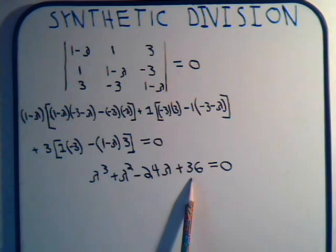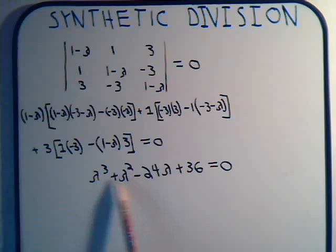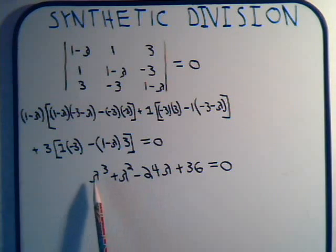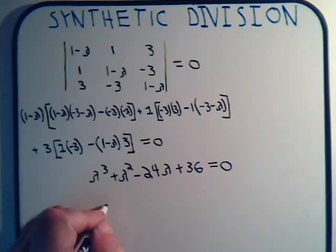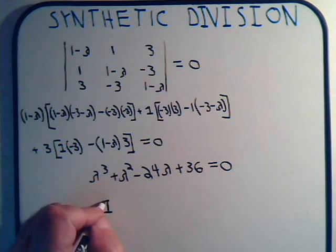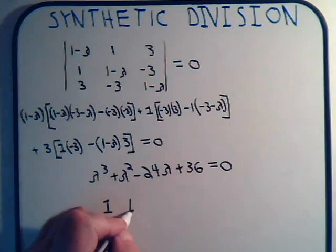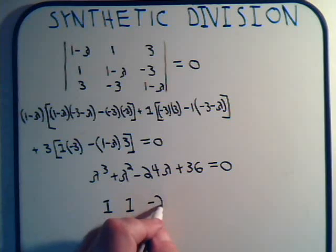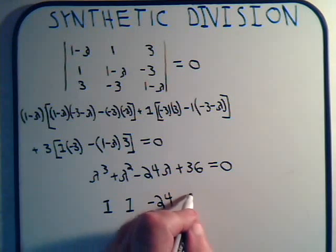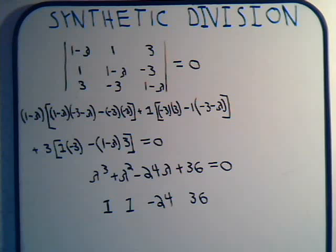We want to ask ourselves, what values of lambda makes this zero? In other words, what are the roots of this cubic polynomial? The best way to determine that is to see if we can express this in terms of its prime factors. When we write down our coefficients, we have 1, 1, minus 24, and plus 36.